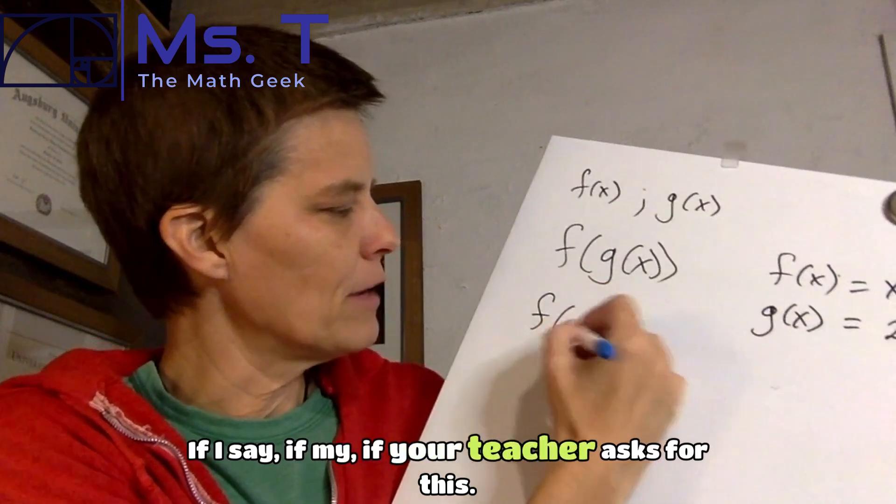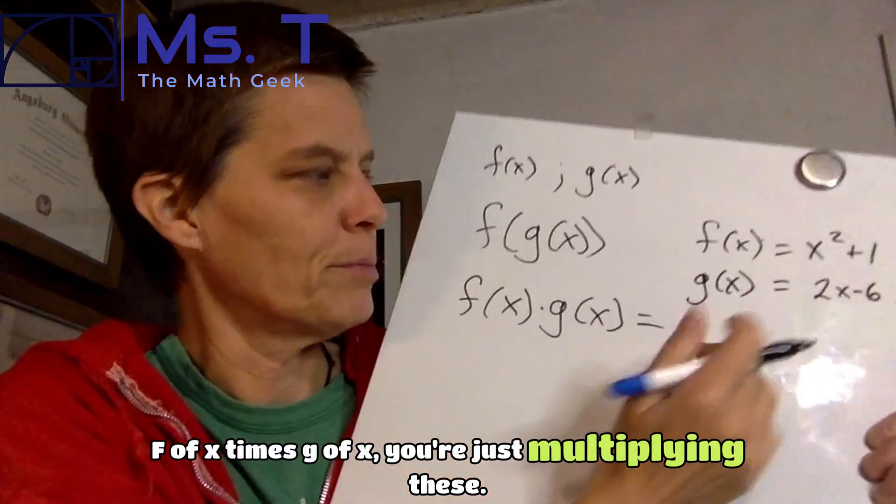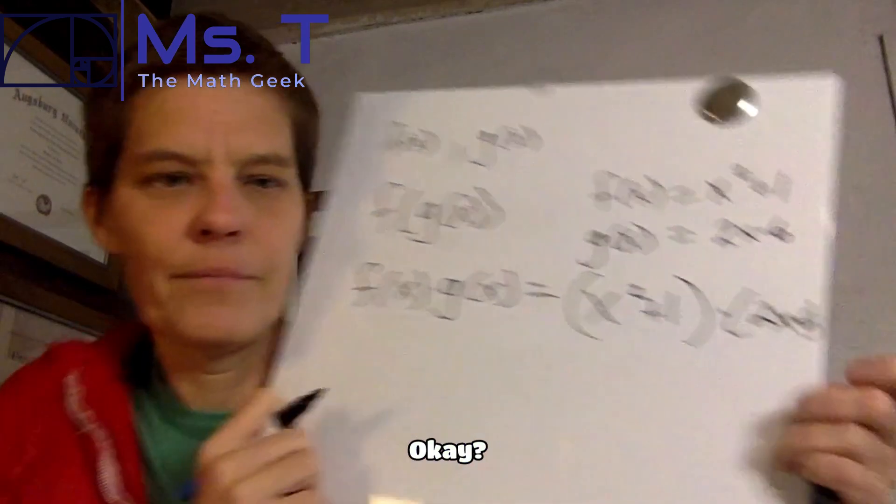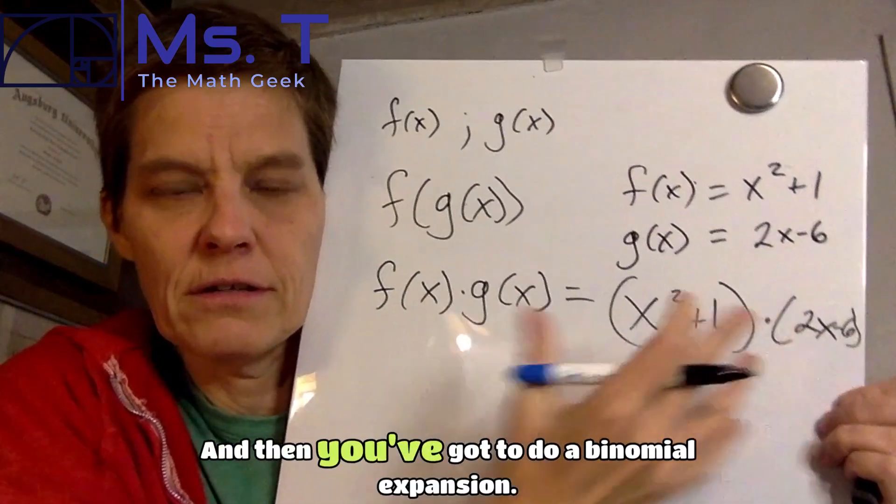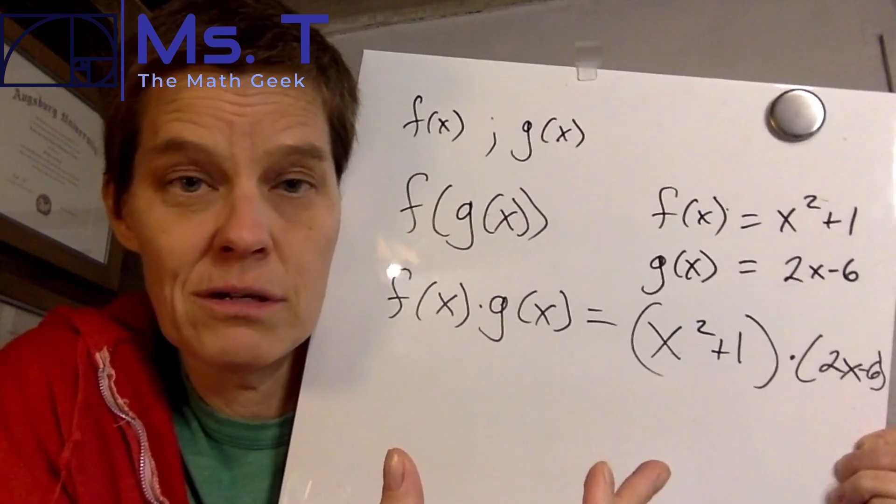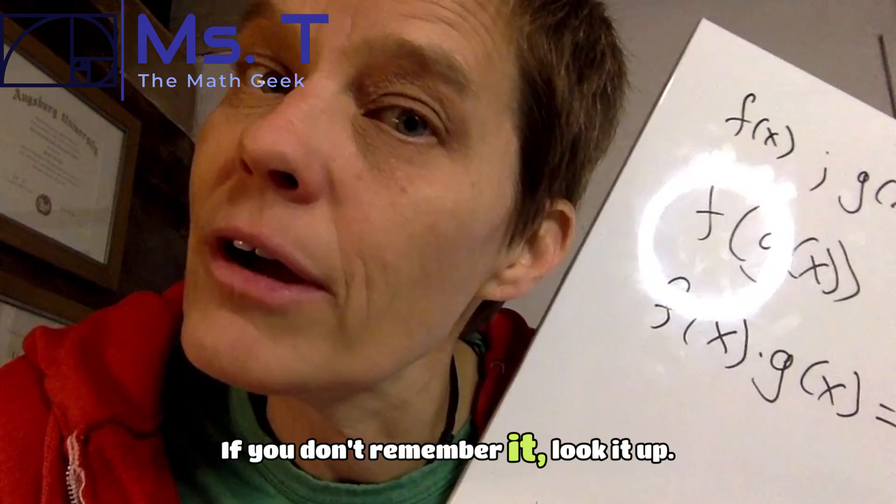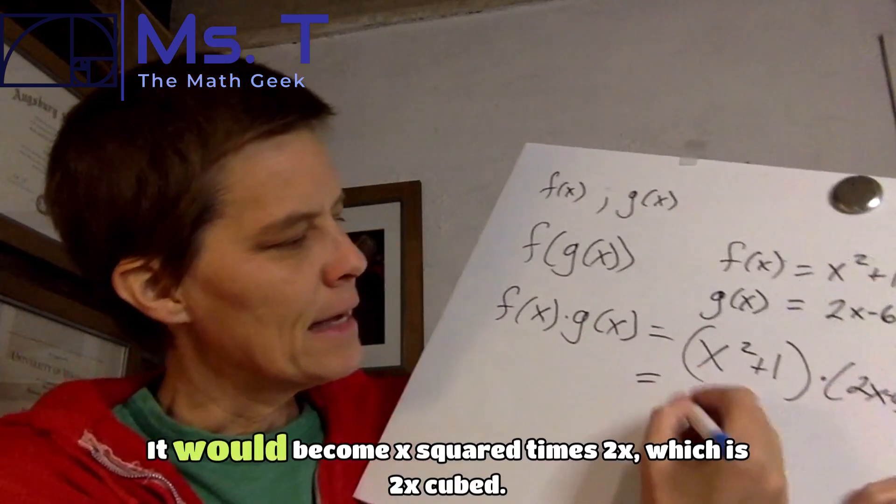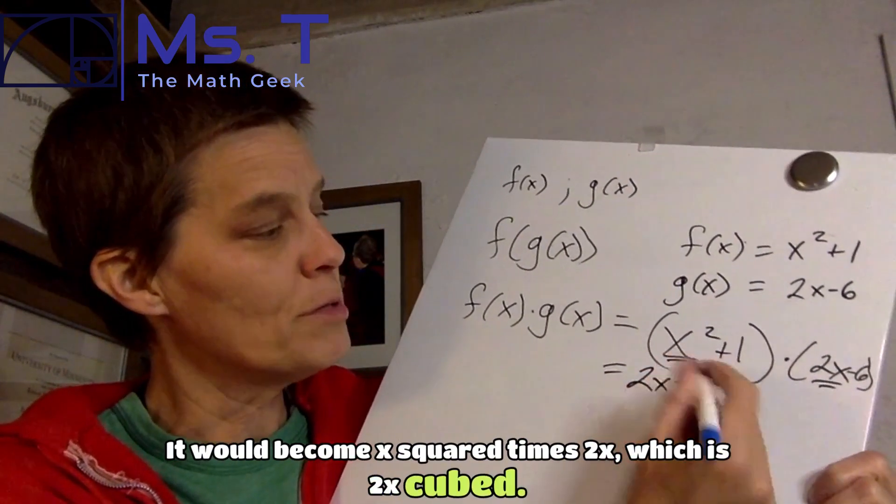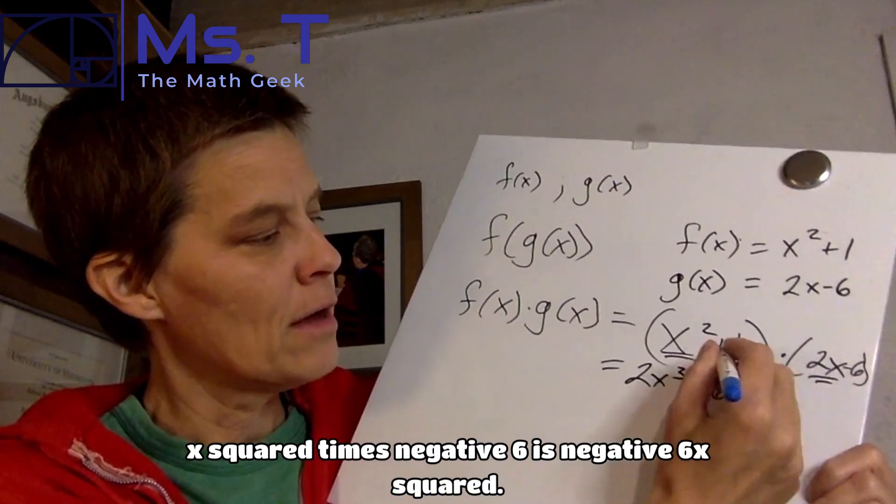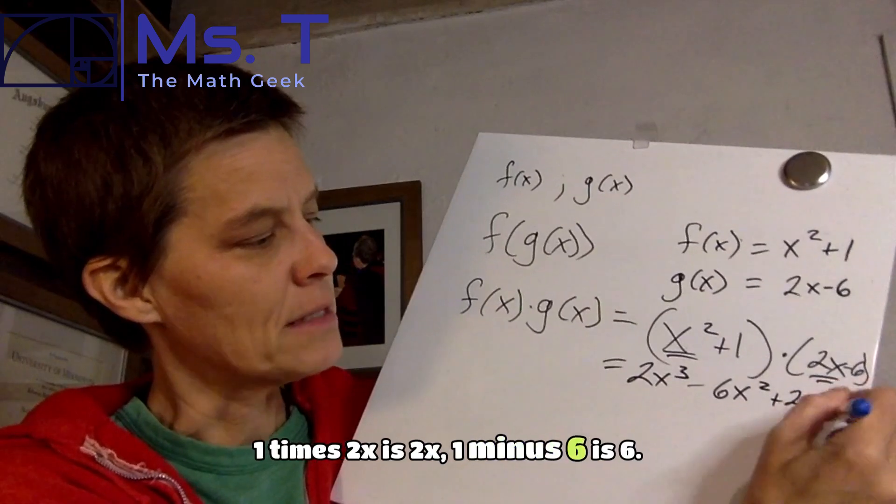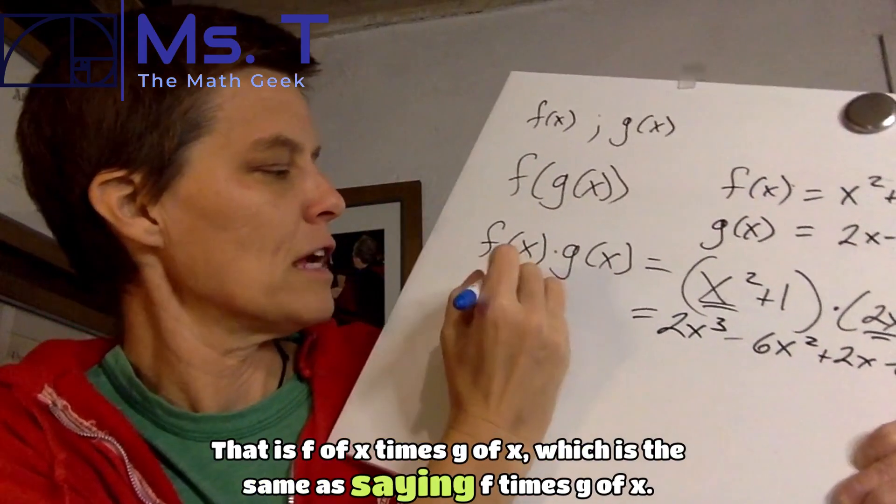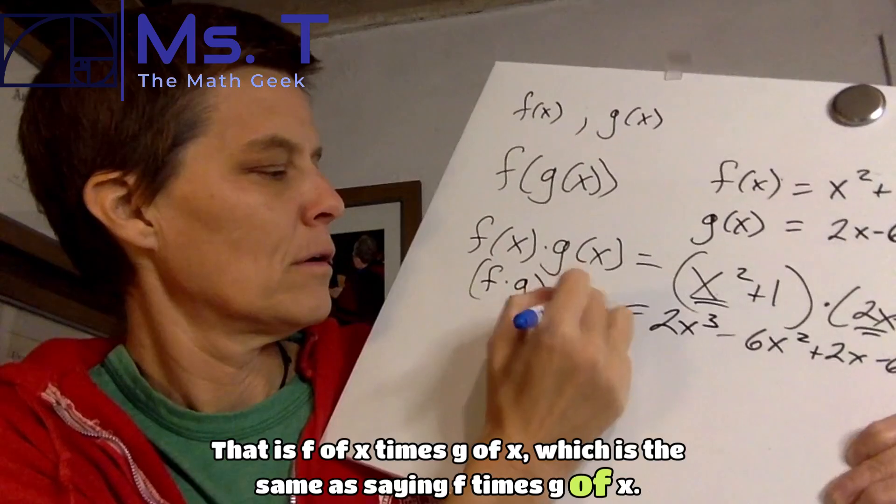If I say, if your teacher asks for this, f of x times g of x, you're just multiplying these. You're saying that's x squared plus 1 times 2x minus 6. I know I ran out of it. x squared plus 1 times 2x minus 6. And then you've got to do a binomial expansion. If you don't remember it, look it up. But now watch. So this would end up being, I'll do this for you. It would become x squared times 2x, which is 2x cubed. x squared times negative 6 is negative 6x squared. 1 times 2x is 2x. 1 minus 6 is negative 6. That's what you get. So you get these four components from that. That is f of x times g of x, which is the same as saying f times g of x. They're all the same.